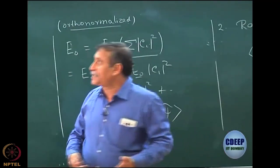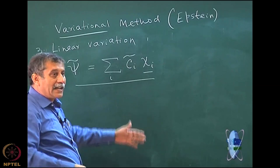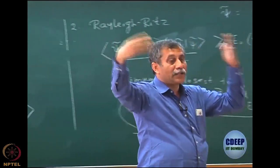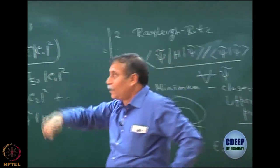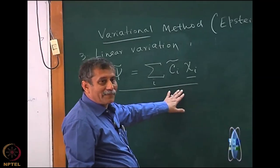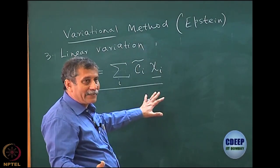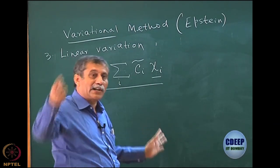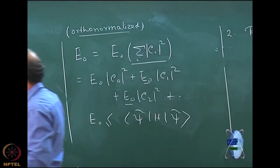Obviously, if my basis is complete — which means it is an infinite dimensional basis — then I go back to Theorem 1, Euler variation, which means I actually get exact solutions. I have already discussed such a case when these are determinants — full CI. So if I have an infinite basis and take all determinants, then I will get exact solutions, which I already told you — full CI will give you the exact wave function.